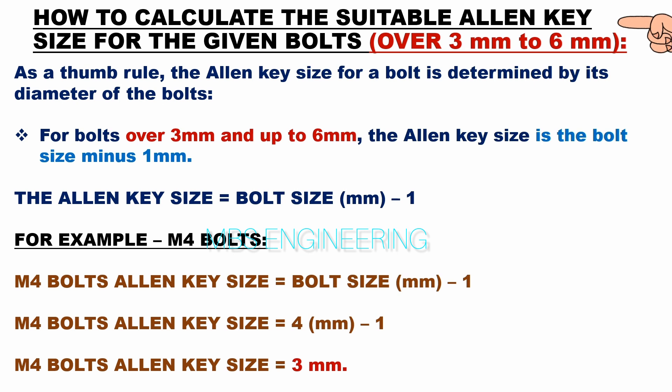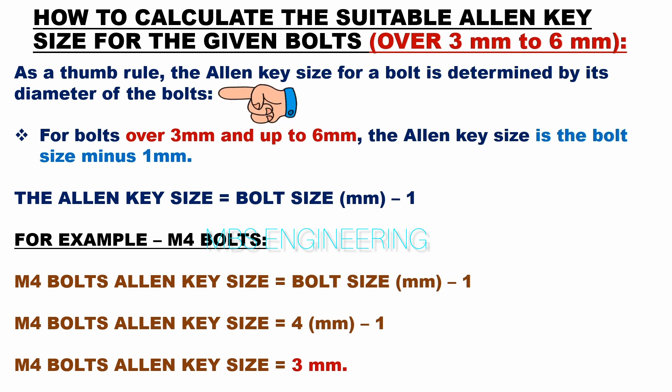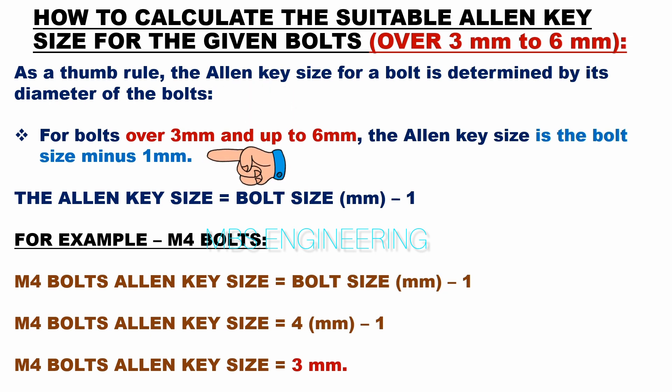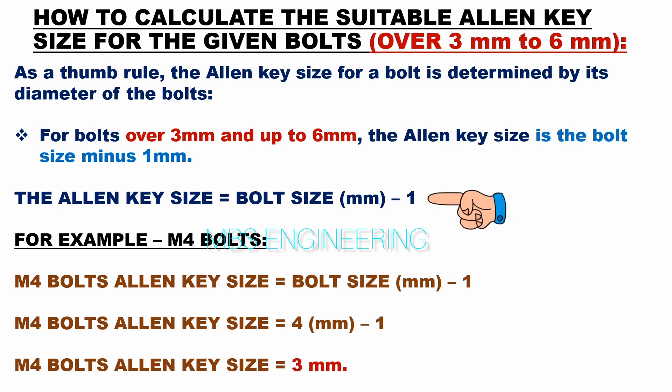We will understand how to calculate the suitable allen key size for bolts over 3 mm to 6 mm. As a thumb rule, the allen key size for a bolt is determined by its diameter. For bolts over 3 mm and up to 6 mm, the allen key size is the bolt size minus 1 mm. The formula is: allen key size = bolt size (mm) − 1 mm.